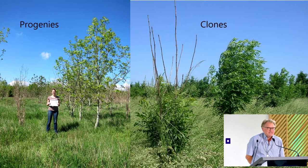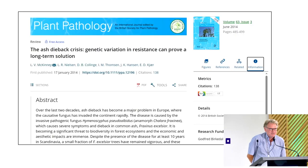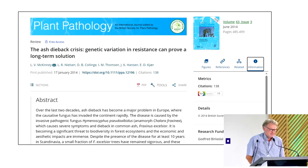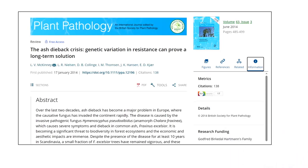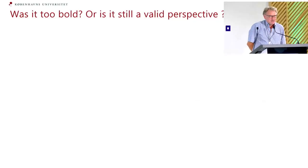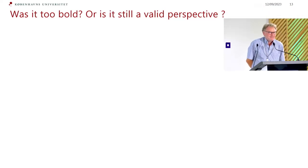We observed that early when we started to study this pandemic in 2007-8, and that led us to the conclusion in our 2013 review: 'The ash dieback crisis — genetic variation and resistance can provide a long-term solution.' We were also based on estimating heritabilities. Now it is 10 years ago, and we could ask: was it too bold to conclude that, or is it still a valid perspective?